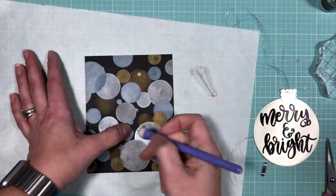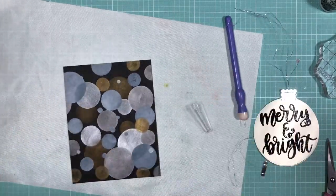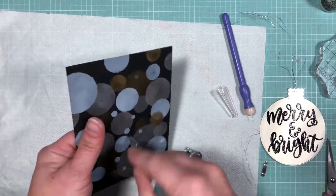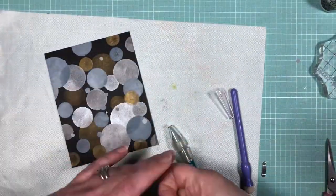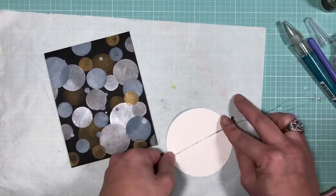So here I'm kind of eyeballing where I want the center of the ornament to sit on the card, and I'm taking a poke tool and just making a hole right in the center where I'm going to be fishing the thread through.